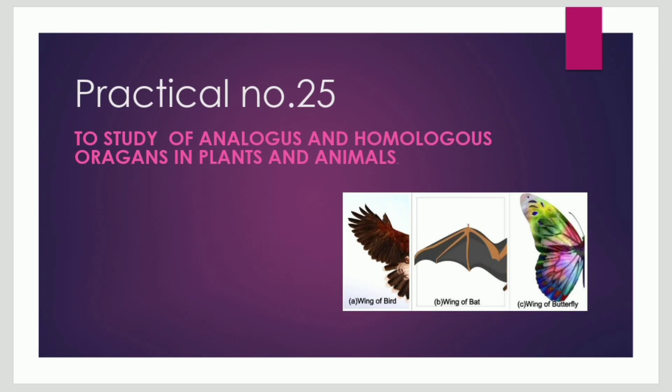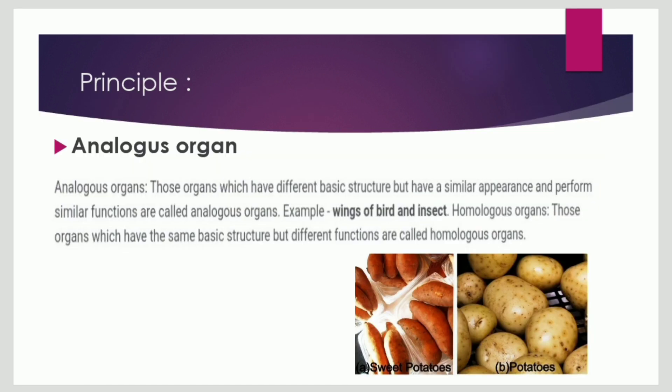Practical No. 25: Study of Analogous and Homologous Organs in Plants and Animals. Principle: Analogous organs are those which have different basic structure but have a similar appearance and perform similar functions. For example, wings of birds and insects.